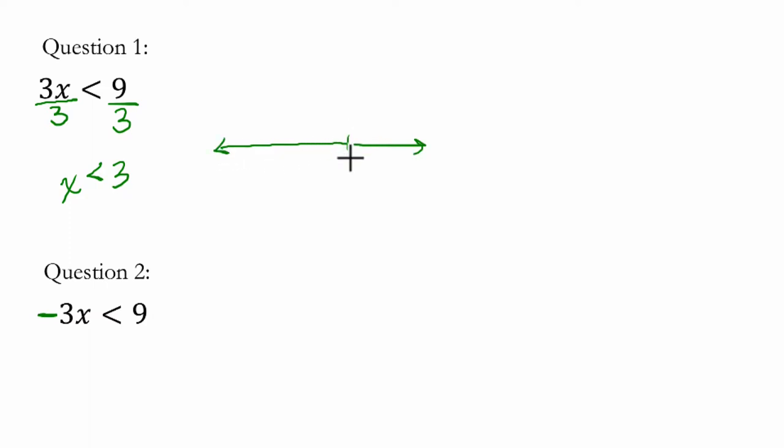So if you imagine here's our number line, here's 3, 4, 2, and 1. So if we say x is less than 3, open circle at 3, we're not including 3. X can be anything smaller than 3, and this will be true.